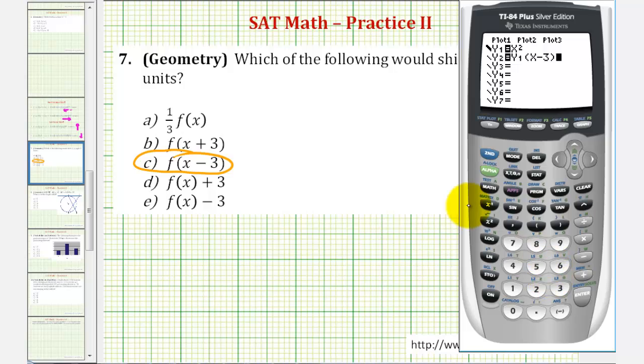So the only difference here, instead of using f, we're using y one. And to make sure we have the standard window, we'll press zoom six. So there's the basic graph, and here's the graph of the translated function. Notice how it has been shifted right three units, verifying our solution.